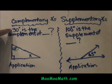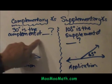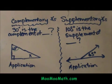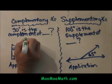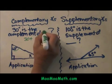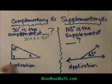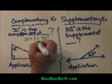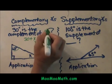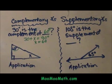So 30 is the complement of what angle? The definition says I take 30 plus an unknown angle x and it will add up to 90. So I subtract 30 from both sides and x is 60. So that is a 60 degree angle.